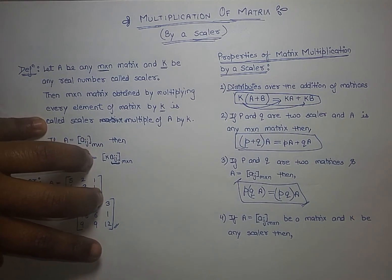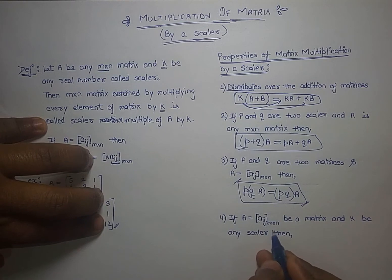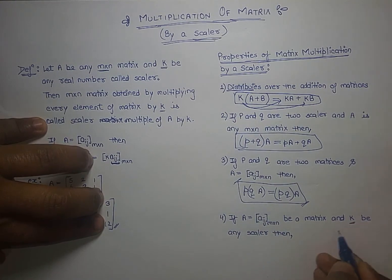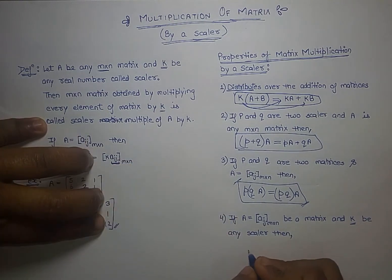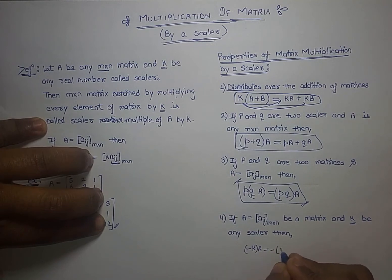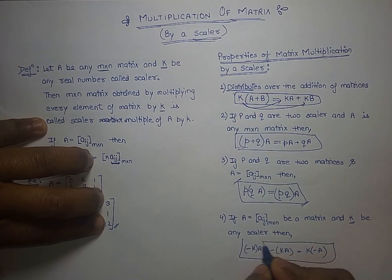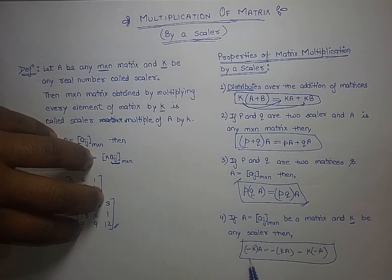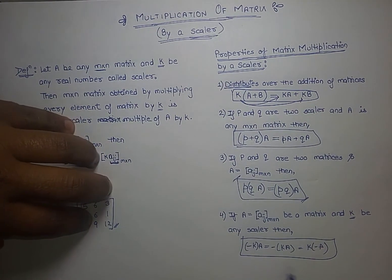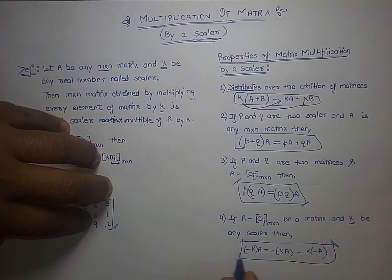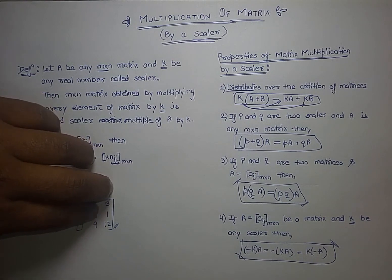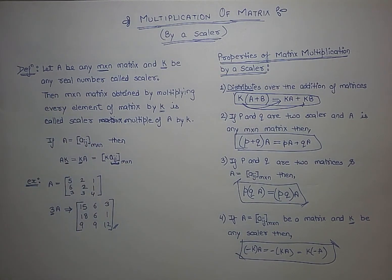The fourth property is: if A is a matrix of size m by n and k is any scalar, then (-k)A = -(kA) = k(-A). These three expressions are all equal, because the negative sign doesn't change the overall result — it is a trivial property.